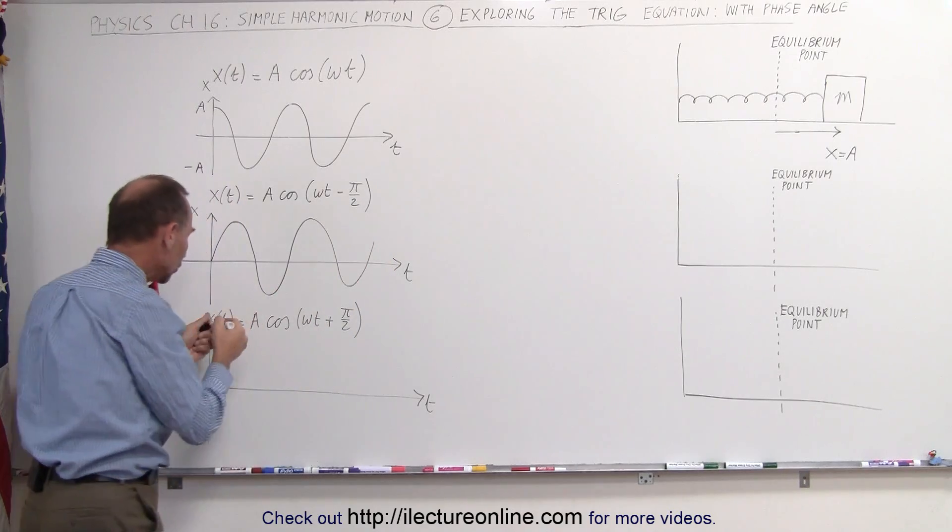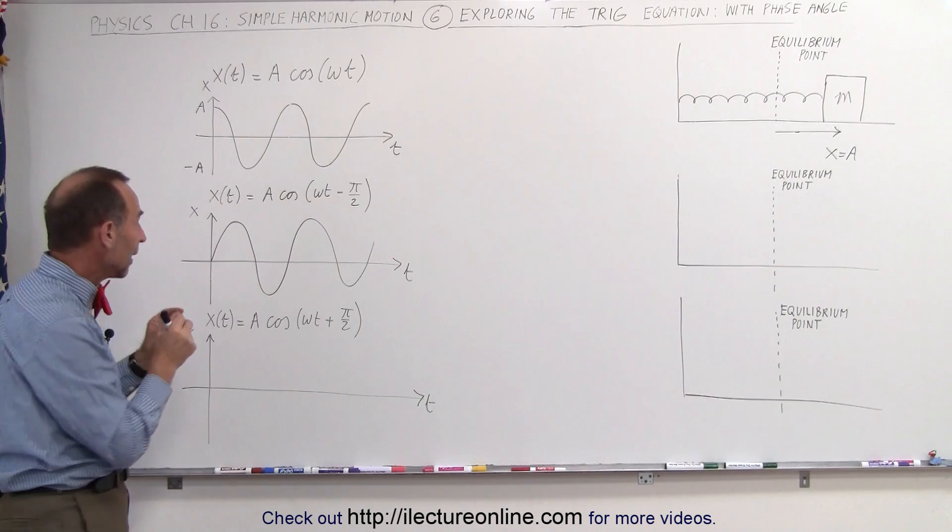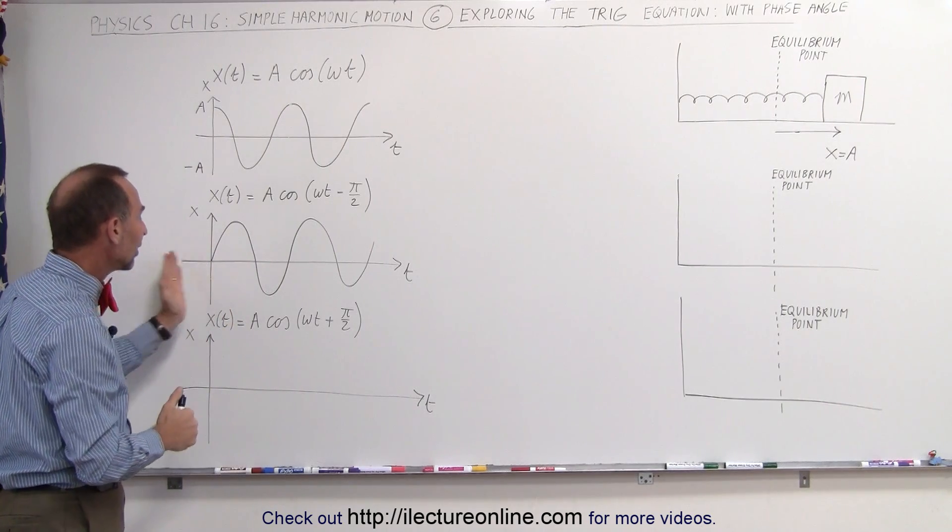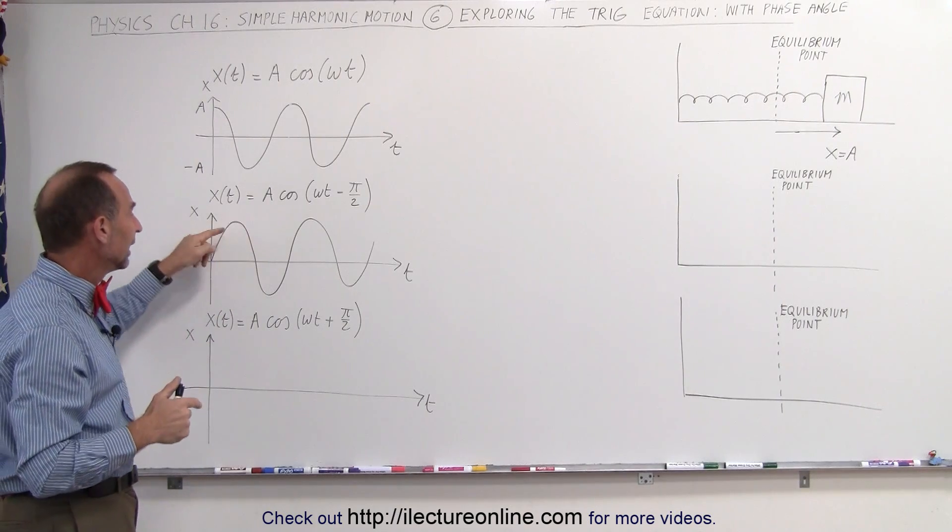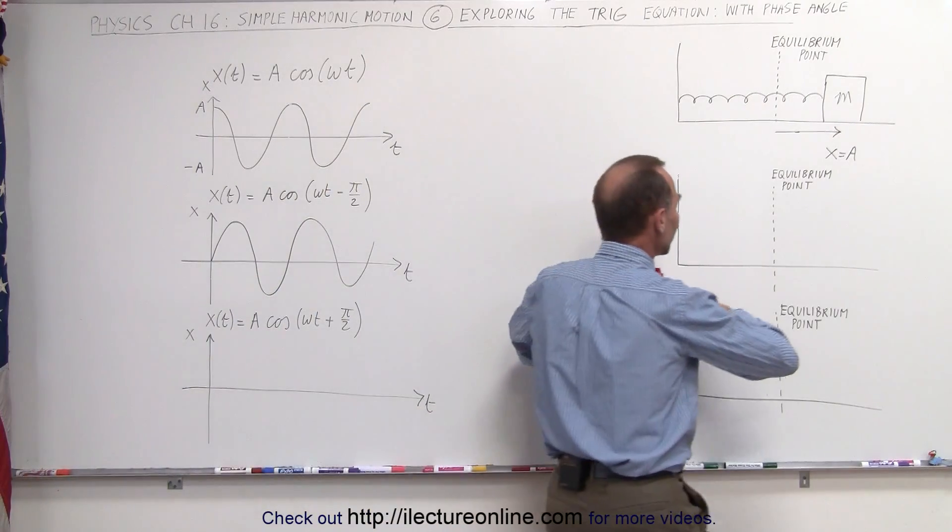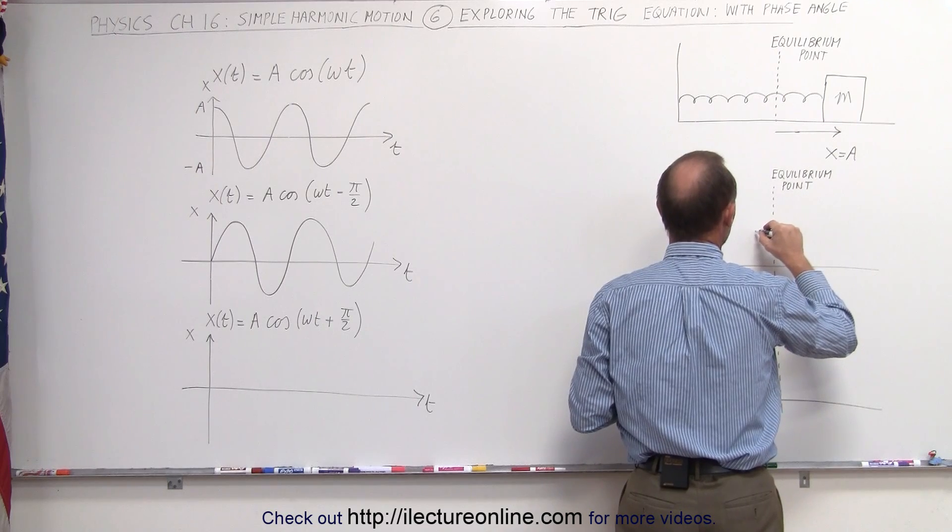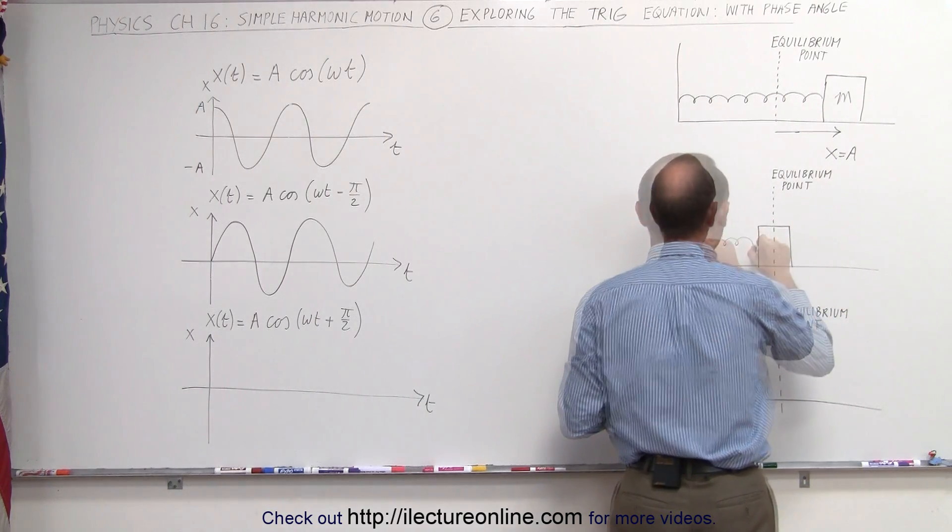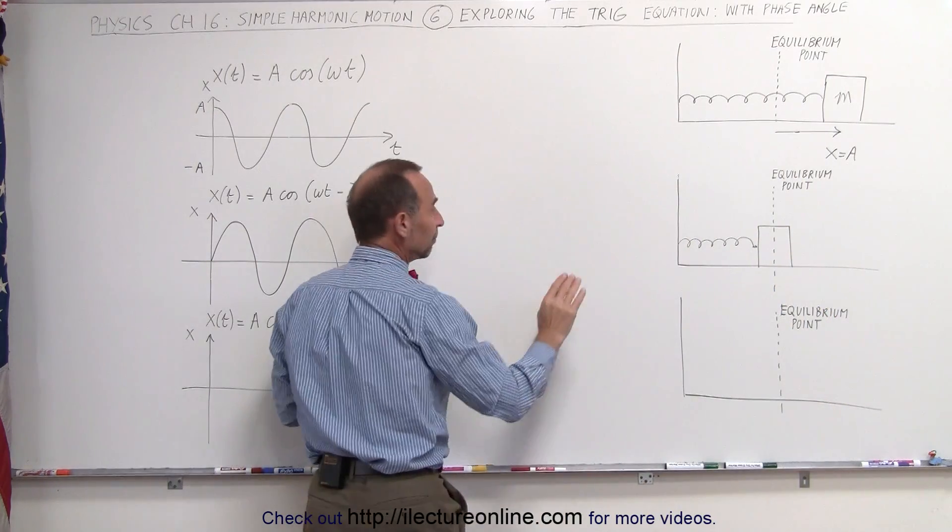And what does that mean to the original situation? Notice that at t equals 0, the block will now be at the origin, in this case at the equilibrium point, and as time goes by, it will then move to the positive x direction until it finally reaches maximum displacement in the positive direction.